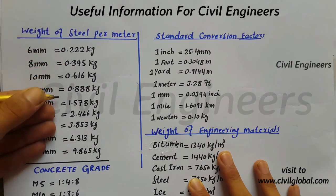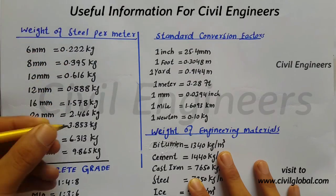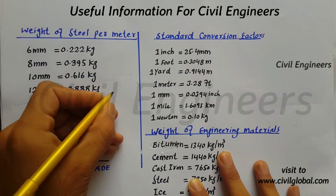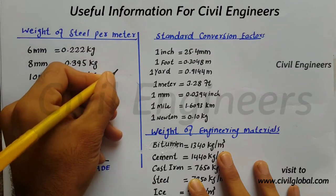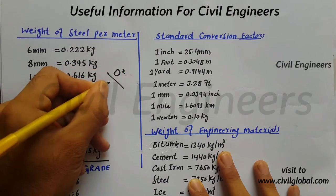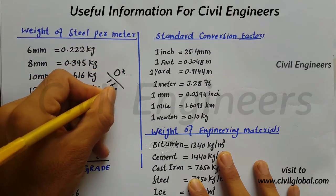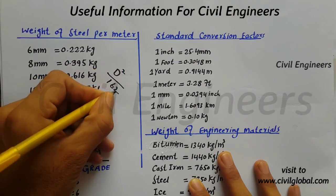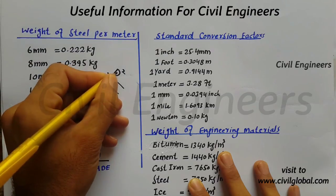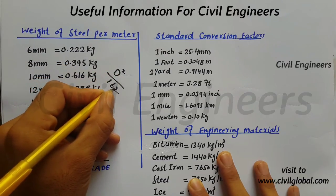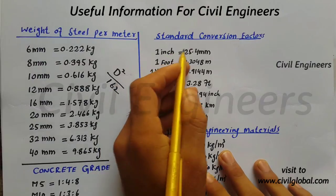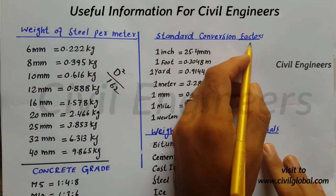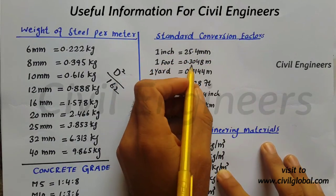We can find out all these unit weights per meter with the help of this formula: D squared divided by 162, where D is the diameter of steel and 162 is the standard conversion factor.